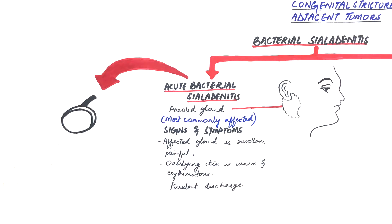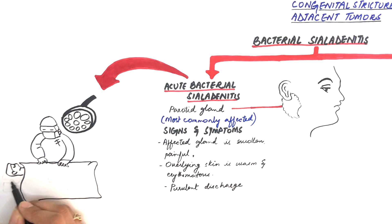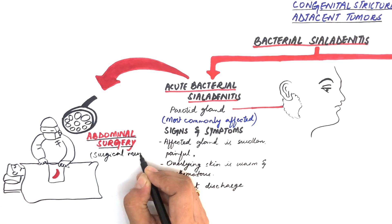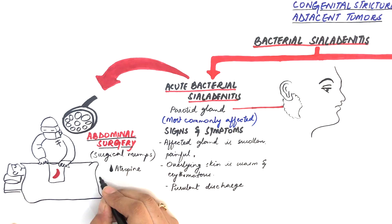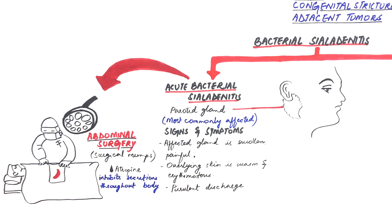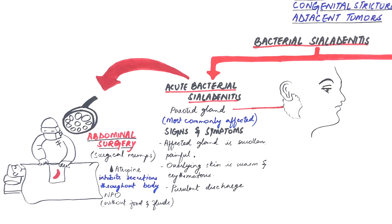One of the most common causes of acute bacterial sialadenitis is abdominal surgery, and the gland affected is mostly the parotid gland. Sialadenitis resulting from abdominal surgery is called surgical mumps. In surgical mumps, drugs like atropine are given to inhibit glandular secretions during surgery, including salivary gland secretions. This inhibition of salivary secretions provides a good medium for bacterial growth, which is worsened by the patient being kept without food or fluids prior to and during surgery.